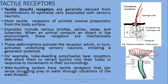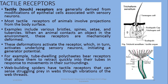When these projections are deformed or change position, they develop a generator potential. Some tube-dwelling polychaete worms detect movement or threat in their surrounding environment through these tactile projections. Spiders also relate vibrations with tactile receptors — their slit organs in the arachnid body are also related to tactile reception.